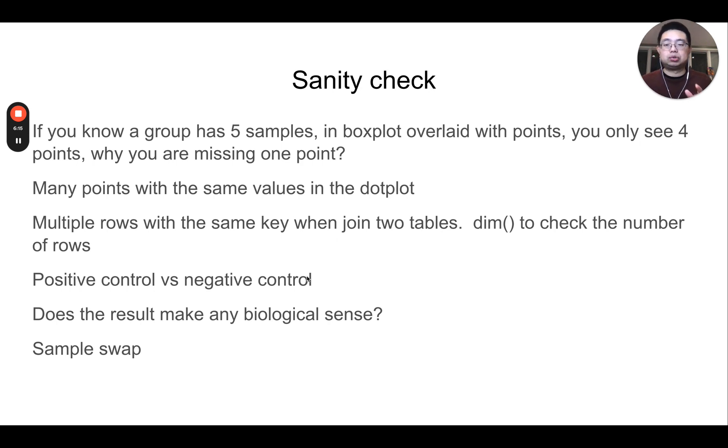Next is about positive control and negative control, just like doing wet lab experiments. When you're doing data analysis, you also want to have some positive control and negative control in mind. For example, if you're doing a gene expression analysis after T cell activation, we know those T cell activation markers, for example PD-1, or exhaustion markers, they may come up. Those are your positive controls. And if you don't see that, maybe your data analysis is wrong, or maybe the experiment is not carried out correctly. Does the result make any biological sense? You always want to talk to a biology expert to understand whether the result that you have is making any biological sense.